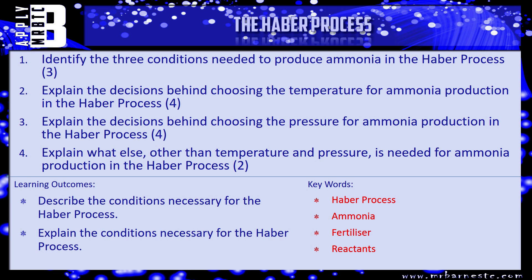Number two: explain the decisions behind choosing the temperature for ammonia production in the Haber process. Talk in terms of the fact that one way is exothermic and one way is endothermic — which way does increasing the temperature favour? Also talk about kinetic theory to explain why we settle on 450 degrees. For number three, explain the decisions behind choosing the pressure. For number four, explain what else other than temperature and pressure is needed — what does the catalyst do? Two marks, two points. Pause the video, have a go.